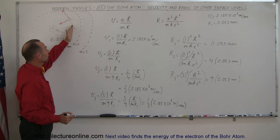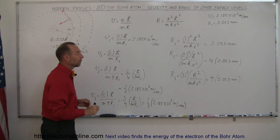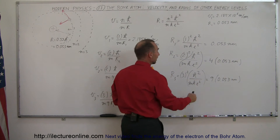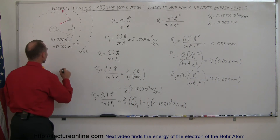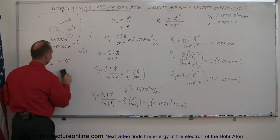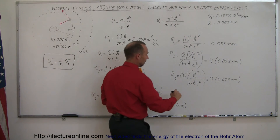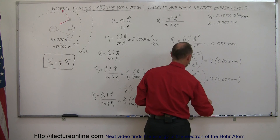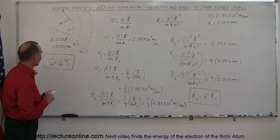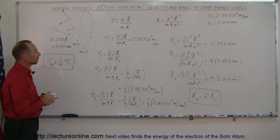So what we're discovering is that as we go further out — second, third, fourth orbit and so forth — the velocity will be 1/2, 1/3, 1/4, 1/5, 1/6, and so on. And the radius will be 4, 9, 16, 25 times the original radius. In general, V_N equals (1/N) times V1, and R_N equals N² times R1. That's how we find the velocity and radius of the electron in the various energy levels of the hydrogen atom.